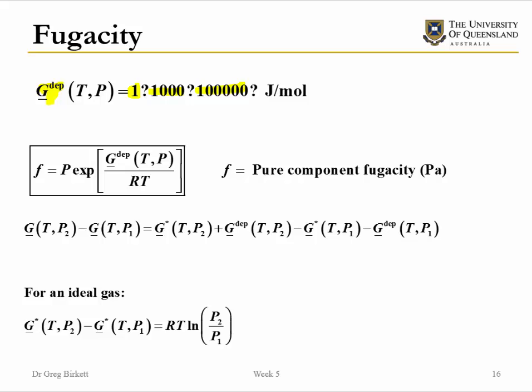Partly to address this, but also because it helps with the modelling of phase and chemical equilibrium, G.N. Lewis — along with many of his other great ideas — proposed a quantity called fugacity. The fugacity is equal to the pressure times this collection of terms, which includes the departure Gibbs free energy. It may not be completely apparent why this is useful straight away, but we will go through that in the next couple of slides.